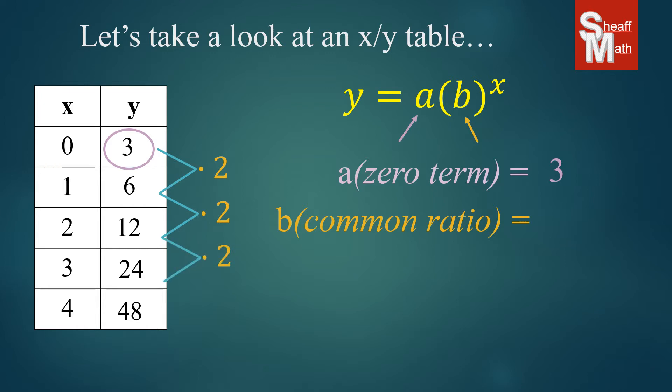You'll find that in an exponential function, this ratio will always be the same if you take a number and divide it by the one before it. So we now have our common ratio.